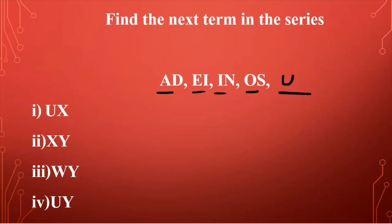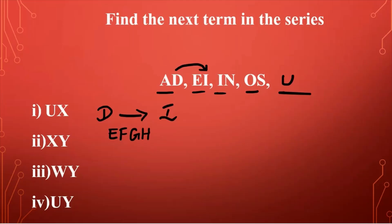Now to find the second letter, we have to find the relationship between the second letters of all the other terms. Between D and I — D is the second letter of the first term and I is the second letter of the second term — there are four letters: E, F, G, and H. Now between I and N, after I comes J, K, L, and M — again four letters.